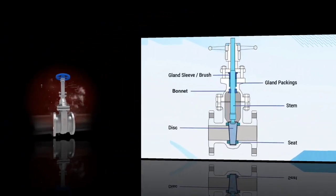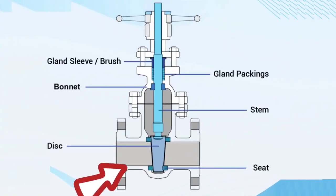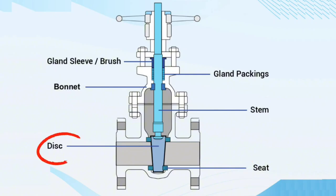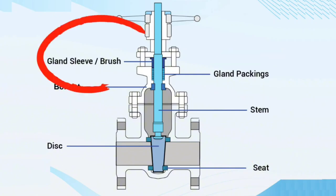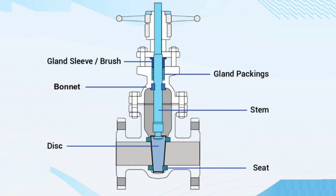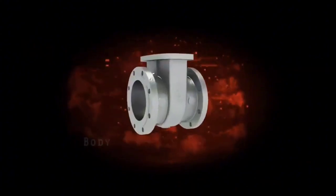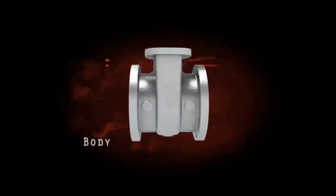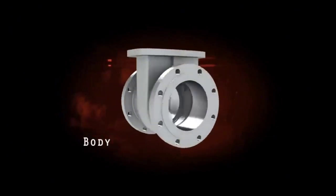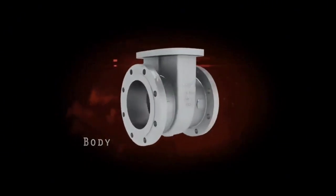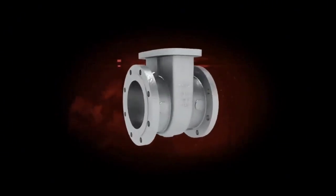A gate valve consists of a valve body, seat, disc, bonnet, gland packings, gland sleeve/brush, and a hand wheel for operating the valve. The body is the main pressure-retaining part of the valve and contains other operational parts such as the gate and seat. It provides passage to flow from the valve and is connected to the piping on both ends.